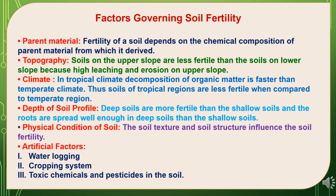Factors governing soil fertility: First, parent material — fertility of a soil depends on the chemical composition of the parent material from which it is derived. Second, topography — soils on the upper slope are less fertile than soils on the lower slope because of high leaching and erosion on the upper slope. Third, climate — in tropical climates decomposition of organic matter is faster than in temperate climates, thus soils of tropical regions are less fertile compared to temperate regions. Fourth, depth of soil profile — deep soils are more fertile than shallow soils, and roots spread well enough in deep soils.